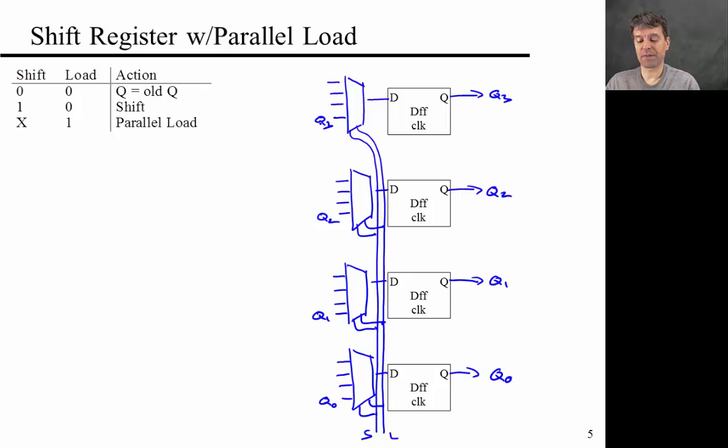For 0 1 or 1 1, I want to realize a parallel load operation. So this just means, just as before, that there is some four bit number P3, P2, P1, P0 that gets loaded in, where each bit of that four bit number gets loaded into one register. And this operation happens in parallel. And that's two cases here: 1 1 and 0 1.